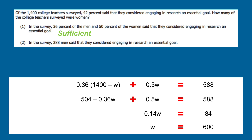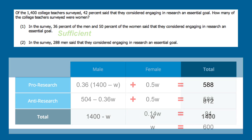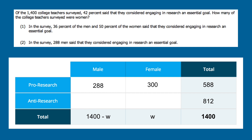To evaluate statement two, we go back to the information from the question stem. Based on statement two, we know that 288 men are pro-research, which allows us to solve for the number of women who are pro-research: 300. But without the number of women who are anti-research, or even the number of men who are anti-research, we have no way to solve for W. So statement two is insufficient, and the correct answer is A.